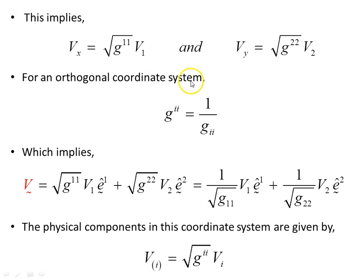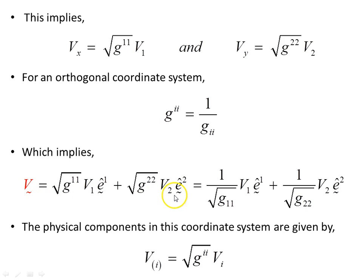For an orthogonal coordinate system the metric has diagonal terms only, and G^ii equals 1 over G_ii — again, no summing implied; these are just individual components. In an orthogonal system the contravariant form is simply one over the covariant form, which means we can express the vector V in either form interchangeably because of this relation.